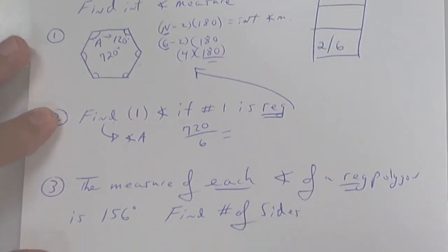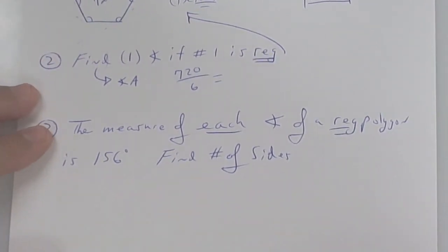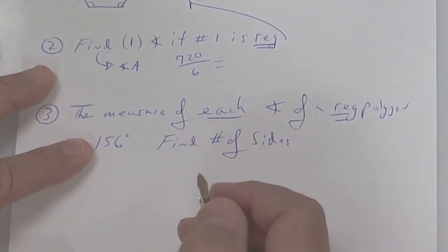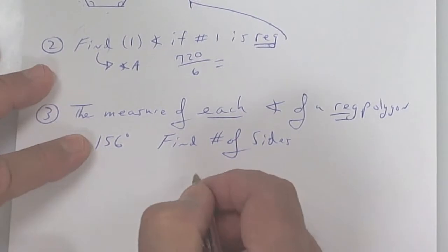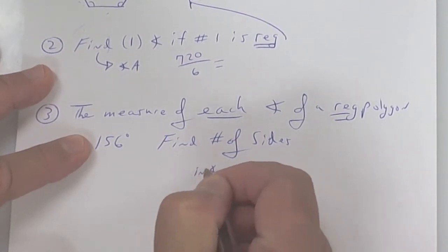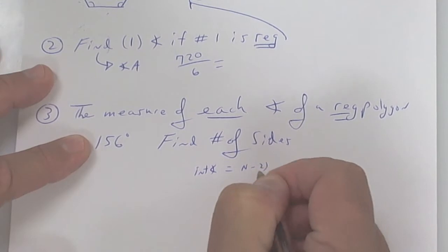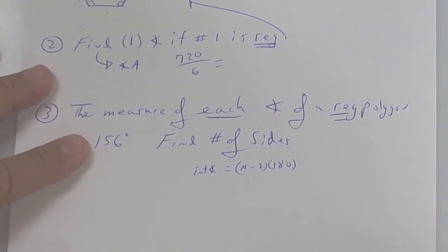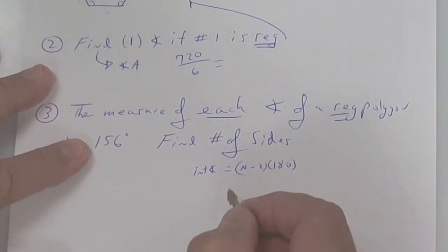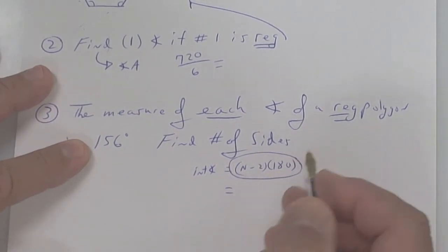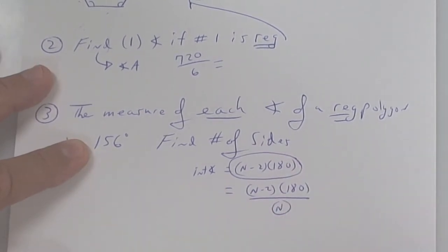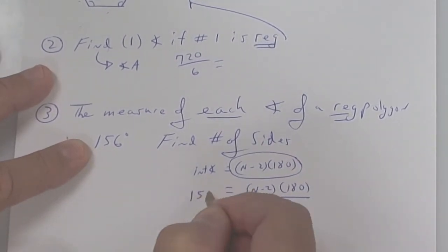Next: the measure of each angle of a regular polygon is 156 degrees — find the number of sides. This was from the end of yesterday's lesson. The formula is: interior angle sum = (n - 2) × 180. That gives you the total for all angles. Since we don't know the number of sides, take the whole sum and divide by n to get one angle, which equals 156.